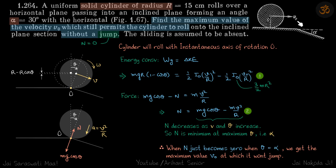As the cylinder rolls down the slope, the contact point O will momentarily be the instantaneous axis of rotation — the whole cylinder simply rotates about this point and continues to roll on the slope. We want the normal reaction to remain nonzero throughout this process. Since we don't know at what point N might become zero, we take a random angle theta and find the normal reaction when the cylinder has turned by angle theta.